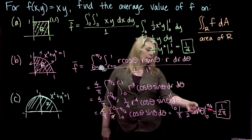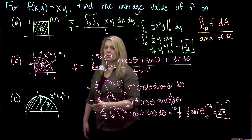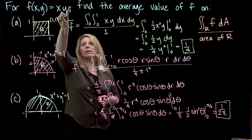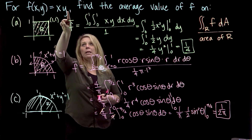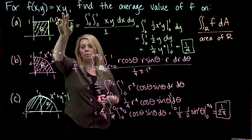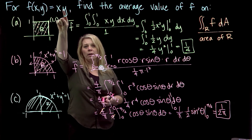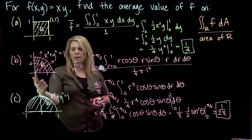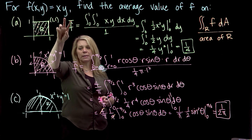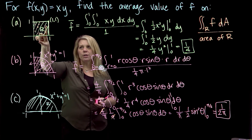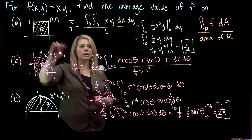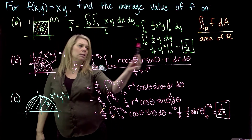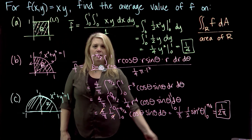Notice that this second answer, 1/(2π), is smaller than the first answer, 1/4. You should be able to think about why that makes sense. The function outputs are larger when you're farther from the origin. Near the origin, or on one of the axes, the function outputs are 0. Because the first region has more points that are farther from the origin, the average value of this function is larger for the first region than the second.